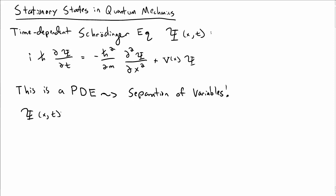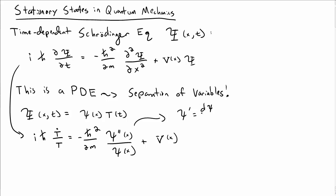What we're going to write is capital Ψ of x and t equals lowercase ψ of x times T of t. If we insert that into our time-dependent Schrödinger equation, we get i ℏ T-dot over T minus ℏ² over 2m ψ double-prime over ψ plus V, where ψ-prime is a derivative with respect to x and a dot is a derivative with respect to time.